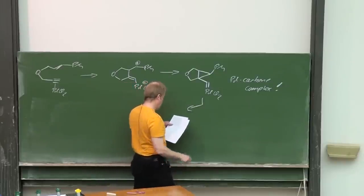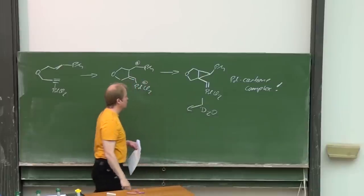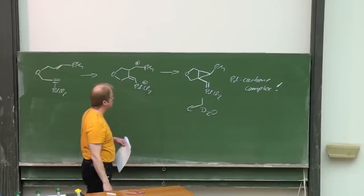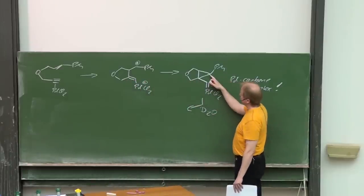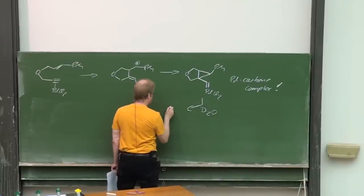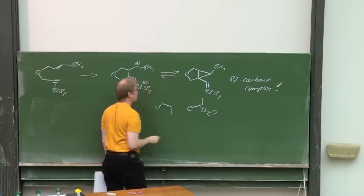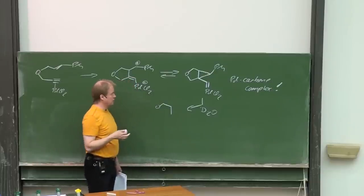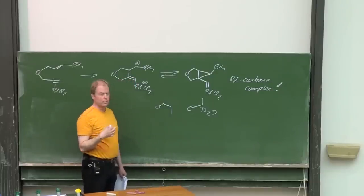And now the nucleophile can attack, for instance D2O. This is the position with the highest delta plus. It's not clear—is it an SN2 or an SN1 process?